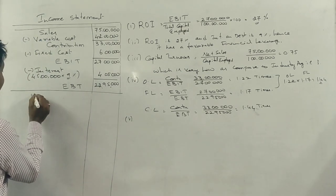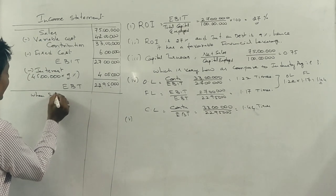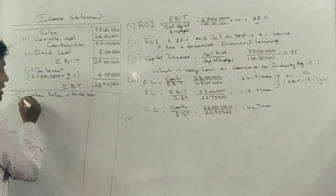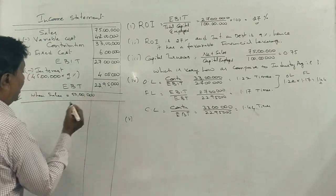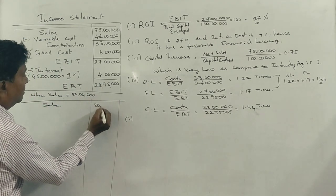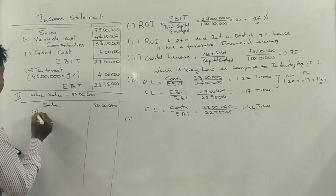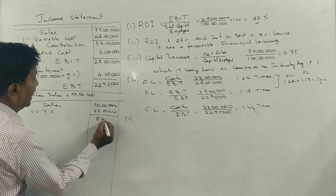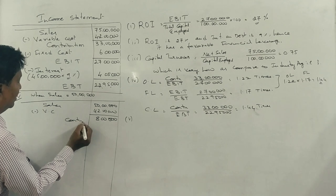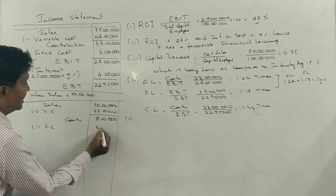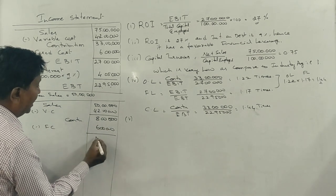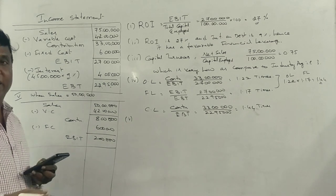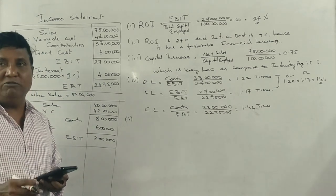Fifth point: when sales is equal to ₹50 lakhs, and the variable cost ratio is applied — variable cost is ₹42 lakhs when sales was ₹75 lakhs — the new variable cost proportionally gives a contribution, minus fixed cost of ₹6 lakhs, resulting in a new EBIT of ₹2 lakhs.